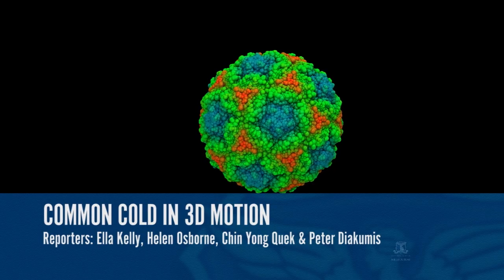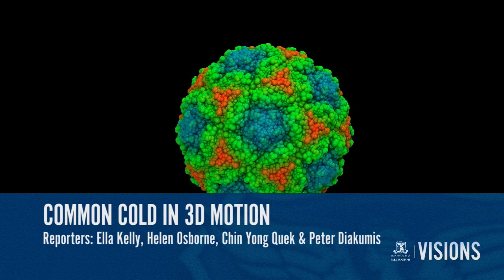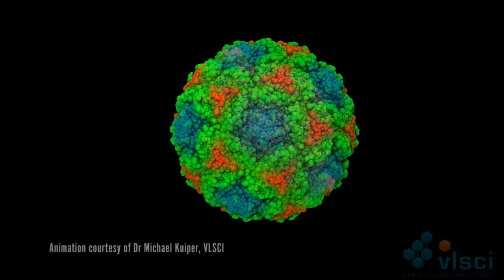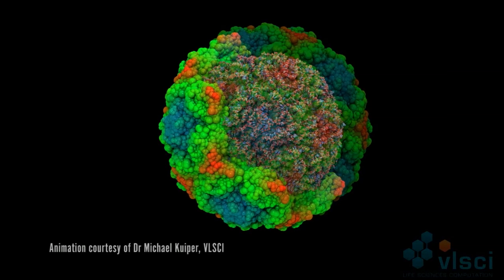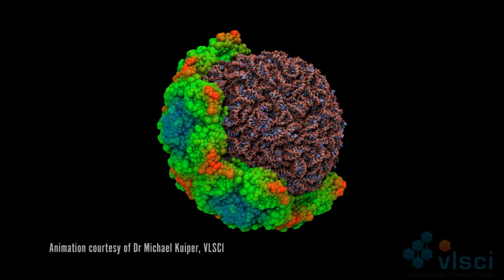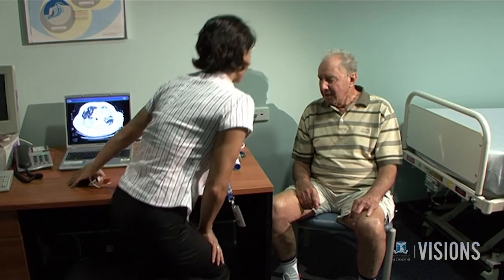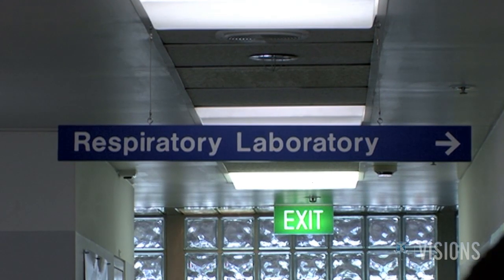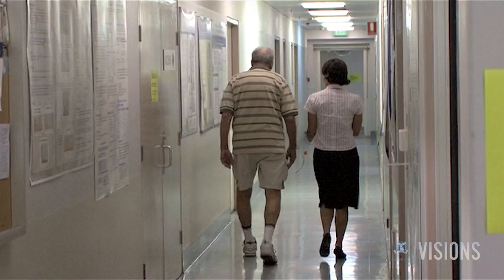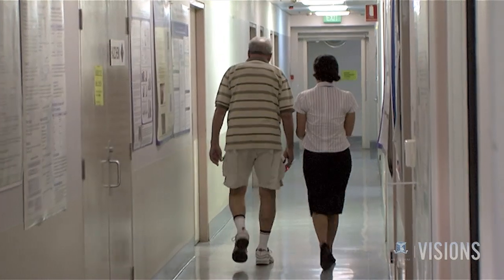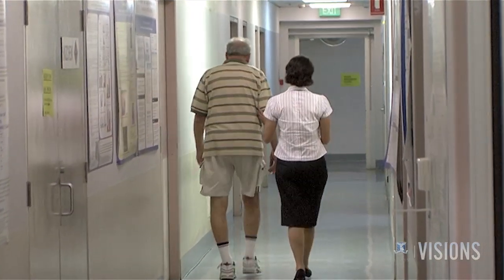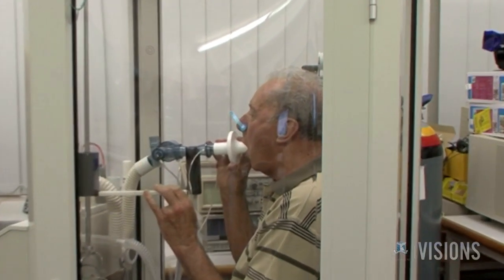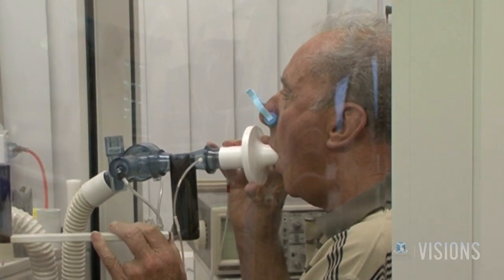Melbourne researchers are using Australia's fastest supercomputer to simulate, for the first time, the 3D motion of the complete human rhinovirus — the leading cause of the common cold. Although for most of us the common cold can be relieved with over-the-counter drugs, rhinoviruses can cause hospitalisation and even death in more than 35% of patients with acute chronic obstructive pulmonary disease. It is also linked to 70% of all asthma exacerbations which can lead to hospitalisation.